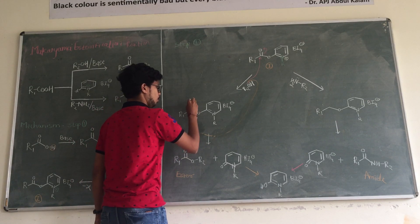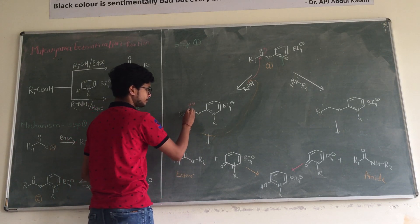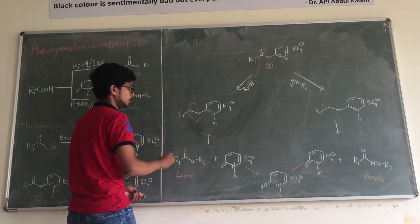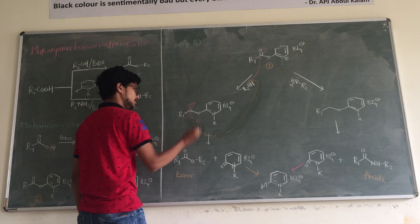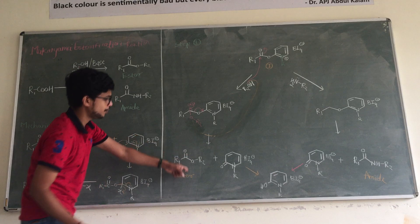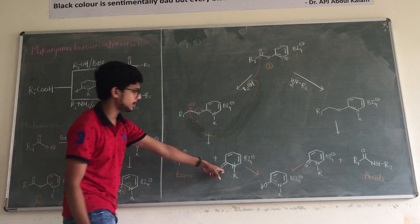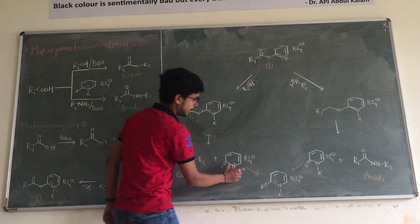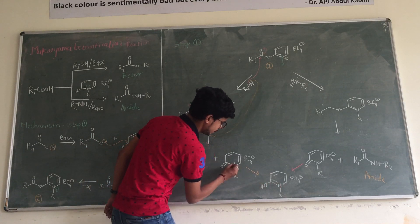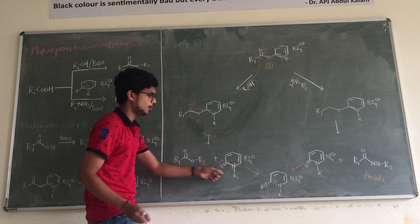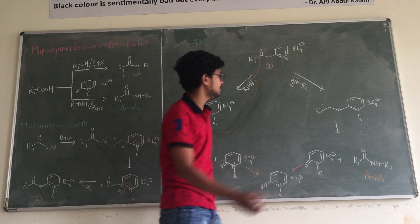When O minus leads, O and R2, O minus shifted here, bond will be shifted here. We get product as an ester and this is a Mukaiyama reagent. After the lone pair will shift here and this is OH, this is the Mukaiyama reagent.